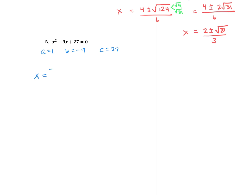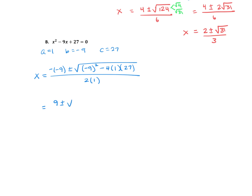x equals negative b plus or minus the square root of b squared — notice I'm using parentheses every time I plug a number in — minus 4 times a, which is 1, times c, which is 27, all over 2 times a. So that negative negative 9 is positive 9, plus or minus the square root of — I grab my calculator and type this in with parentheses — and we get negative 27, all over 2.